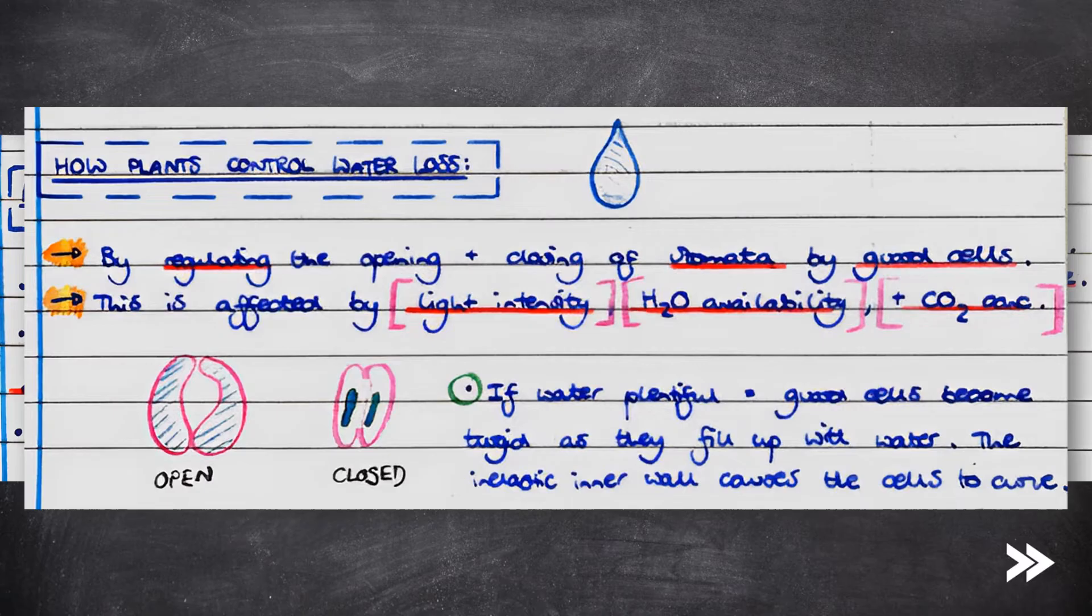The specification, however, not only wants us to consider how leaves are adapted to maximize the rate of diffusion of gases, but also makes sure that not too much water is lost as well. Plants control water loss by regulating the opening and closing of stomata by guard cells. This is affected by three factors: light intensity, water availability, and the concentration of carbon dioxide. If water is plentiful, water moves into the guard cells by osmosis due to a less negative water potential outside of the guard cells. This causes the guard cells to become turgid as they fill up with water. The inelastic inner wall of the guard cells causes them to curve, meaning that the stomata open.